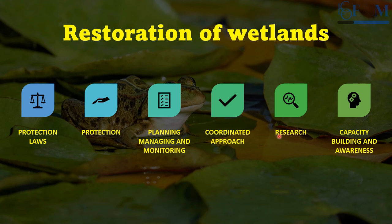The last strategy is capacity building and awareness. Awareness must be created among the general public, educational institutions, and corporate institutions at various levels. Capacity building is a major tool in conservation activities. We need good infrastructure, training, and case studies to teach the values and functions of wetlands in an integrated and multi-disciplinary manner. This concludes our discussion on wetlands — what they are, their types, classification, problems, and ways for their restoration.